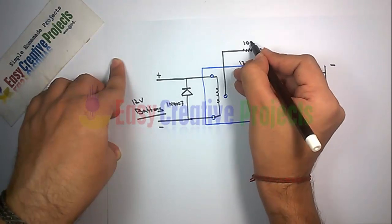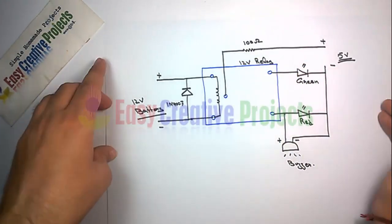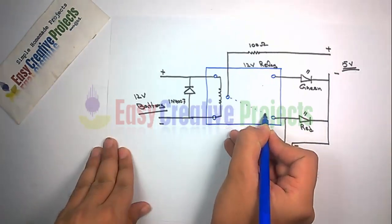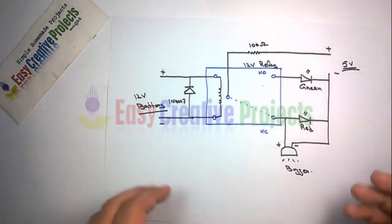The lower pin of relay is normally closed and the upper pin of relay is normally open.